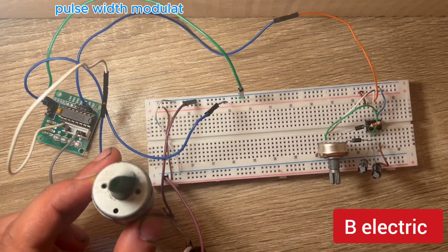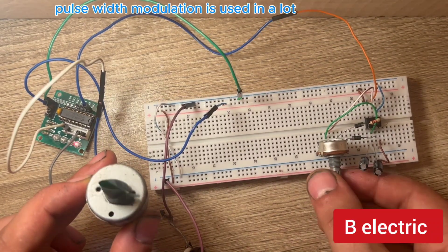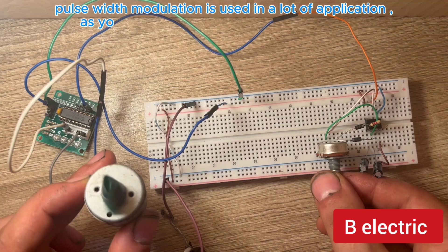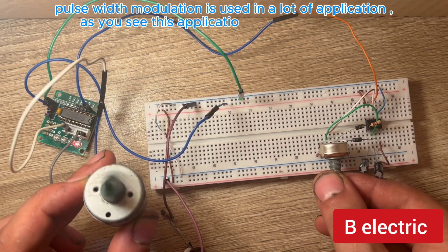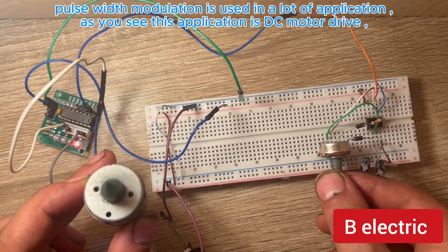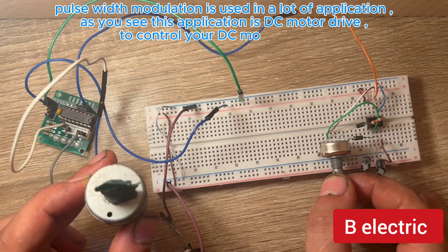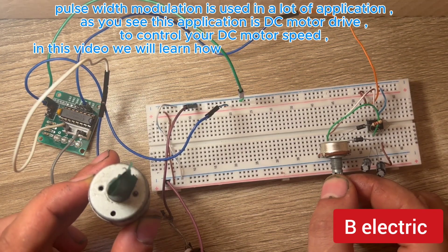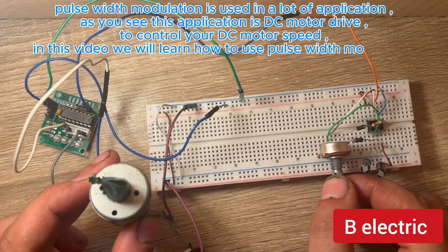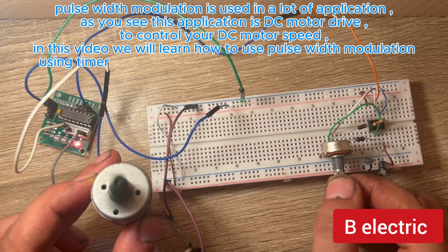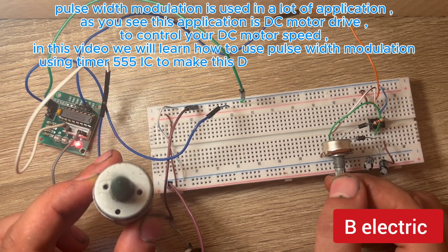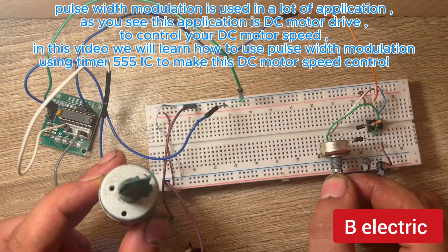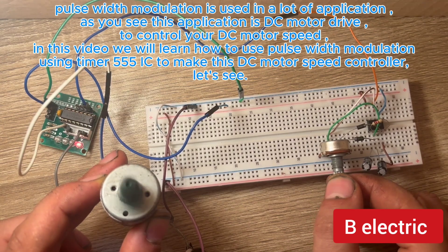Pulse Width Modulation is used in a lot of applications. As you see, this application is DC motor drive to control your DC motor speed. In this video we will learn how to use Pulse Width Modulation using timer 555 IC to make this DC motor speed controller.